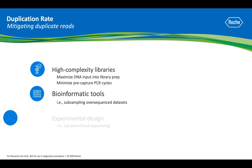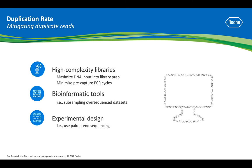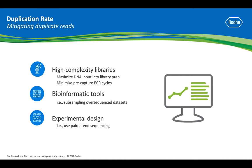Finally, adjust experimental design to help ensure low duplication rates. For example, when applicable, use paired-end sequencing to avoid increased duplicate read numbers due to analysis of single-end sequencing methods.